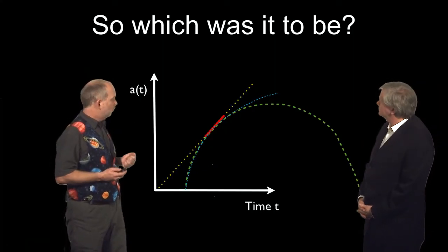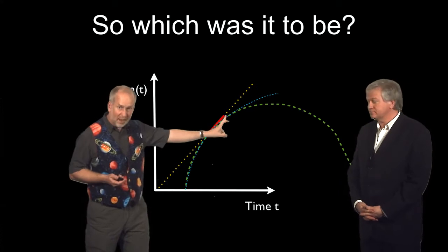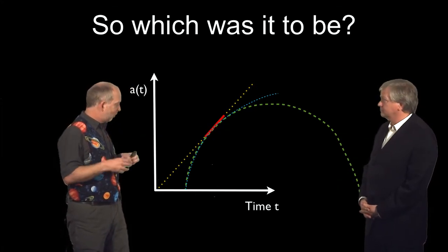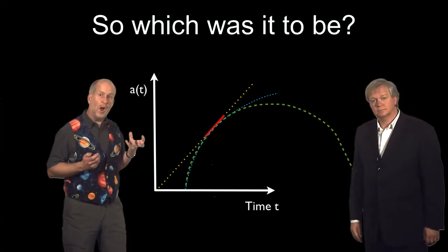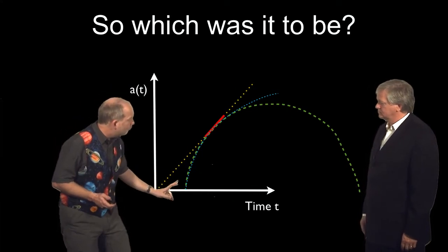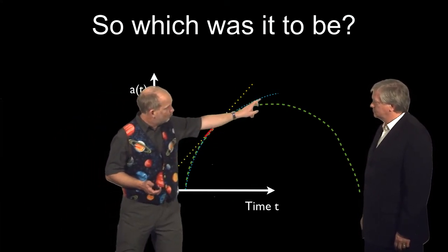So this was the big debate in the mid-1990s. Which was it going to be? We knew space was expanding. We knew there was gravity which was going to slow things down. The big question was, how much is it going to slow things down? Is it only going to slow things down a little bit, like the blue line here?